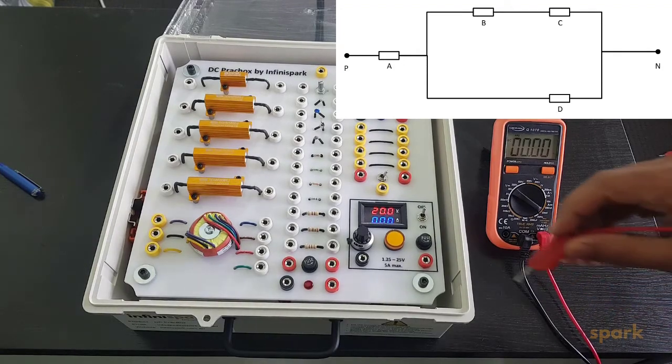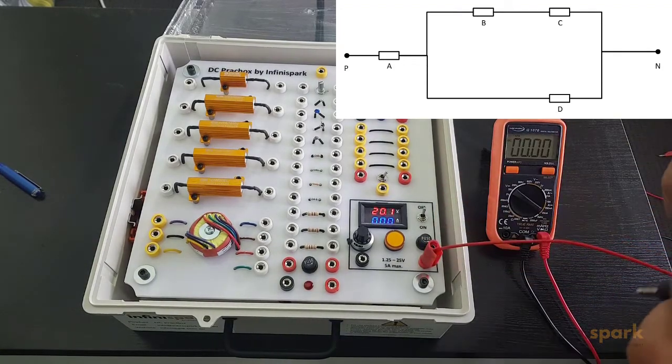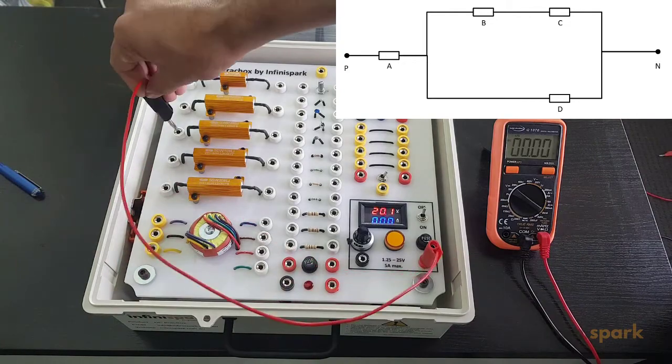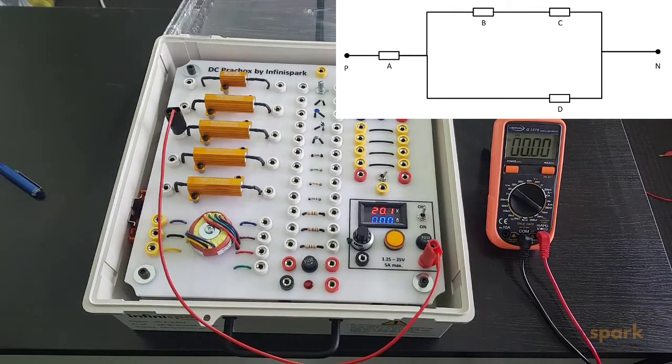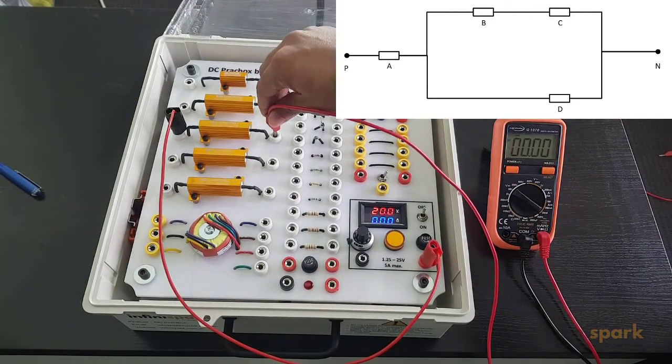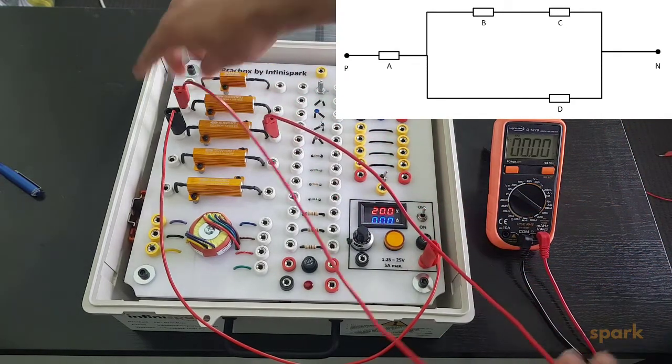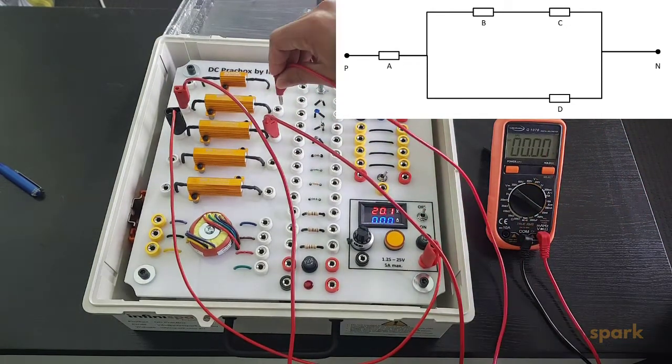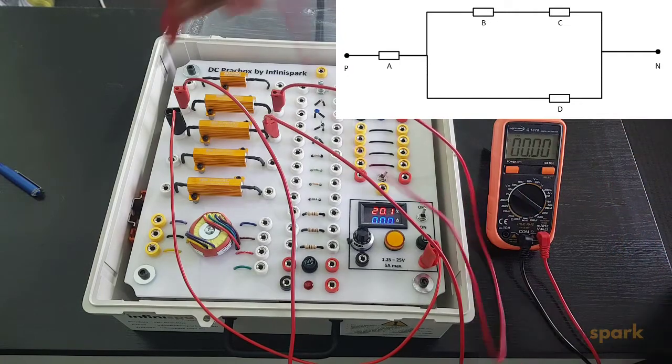In our circuit, resistor A is the 5 ohm resistor. From there, the circuit goes to resistor 2, and from resistor 2 it goes to resistor 10.